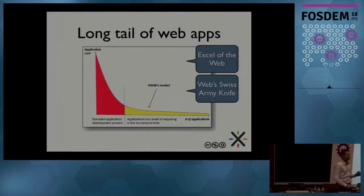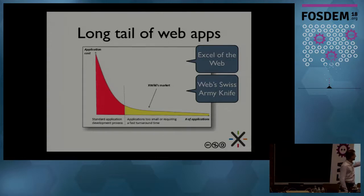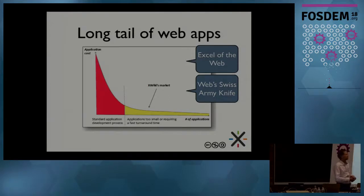For applications, it's a bit the same. We have traditional ways of developing software, and that's on the red part. You're developing a few applications globally because it costs a lot. You need to gather a team of developers, and it takes time to do so. That's why the application costs can be quite high.